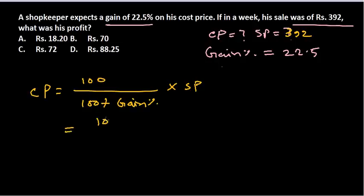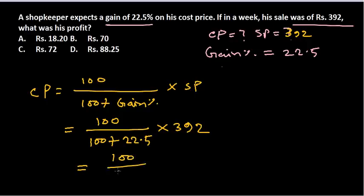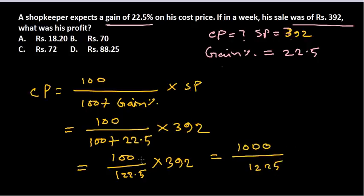So let's put 100 divided by 100 plus the gain percentage 22.5 into the selling price Rs. 392. What is going to be the answer here? 100 divided by 122.5 into 392. Now let's do it. Let's get this straight. We multiply both the top and bottom with 10, and now into 392.